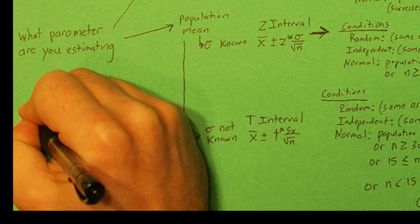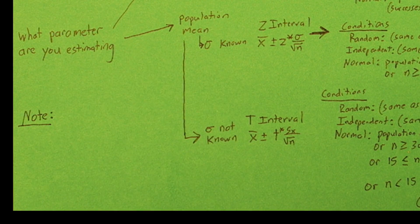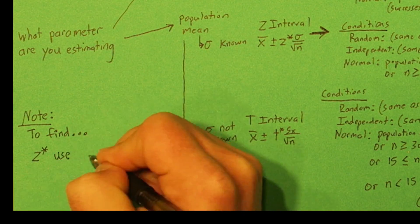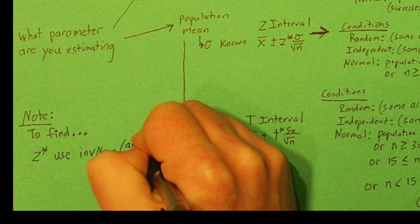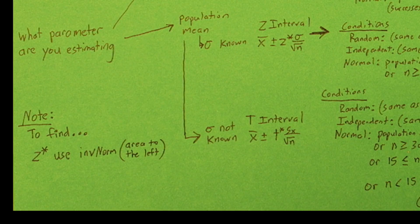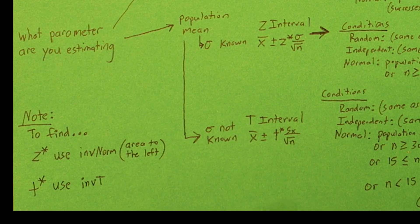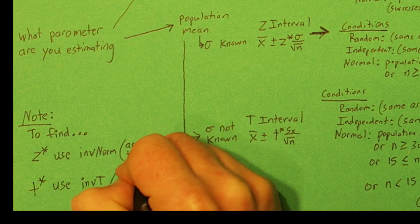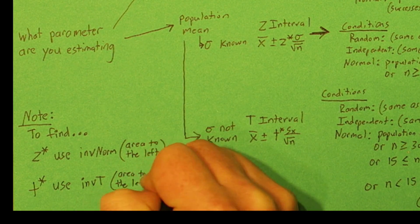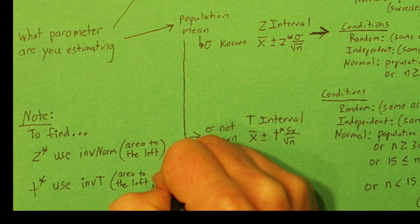One final note about finding the critical values. To find z star, use inverse norm, and you put the area to the left of your cutoff value, z star. To find t star, use inverse t. For this you put the area to the left of your cutoff value, and then you also put in the degrees of freedom, which is sample size minus 1.